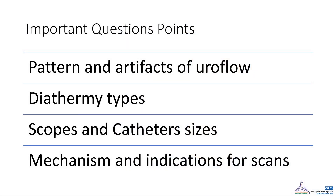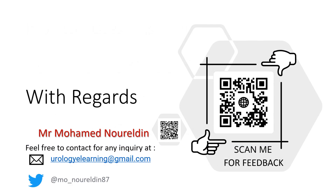In summary, the key points to remember from this talk are: the patterns and artifacts of uroflowmetry, the difference between diathermy types, the scopes and uses of different tools in urology, and the mechanism and indication of the different imaging scans. Thank you for your attention. Feel free to send any questions to the email provided and I will answer them as soon as possible. Feedback via the link in the first comment would be greatly appreciated to help improve this session.